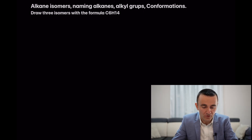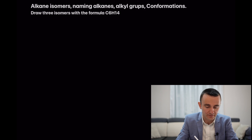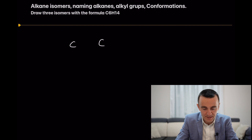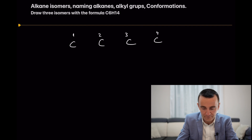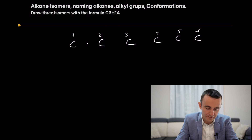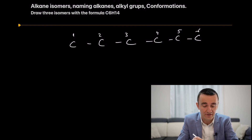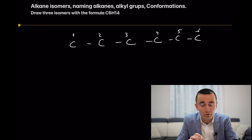Draw three isomers with the formula C6H14. First, let's write a straight chain of six carbons as the molecular formula states — one, two, three, four, five, six carbons. Connect them together and make sure that you fill all 14 hydrogens and that each carbon has four bonds, otherwise it's wrong.